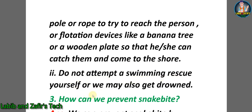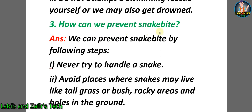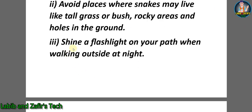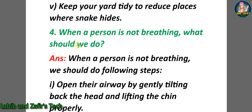Number three: How can we prevent snake bite? Answer: Number one, never try to handle a snake. Number two, avoid places where snakes may live, like tall grass, bush, rocky areas, and holes in the ground. Number three, shine a flashlight on your path when walking outside at night. Number four, use a long stick if you must go into tall grass or bush. Number five, keep your yard tidy to reduce places where snakes hide.